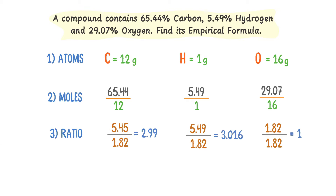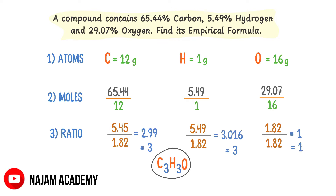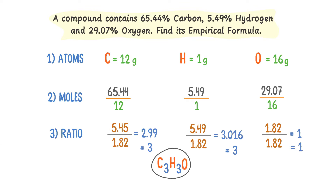Rounding these values, we get 3, 3, and 1. Thus, the empirical formula of the compound is C3H3O. By these three steps, we can easily calculate the empirical formula of any compound. I hope you have learned all about calculating the empirical formula of any compound.